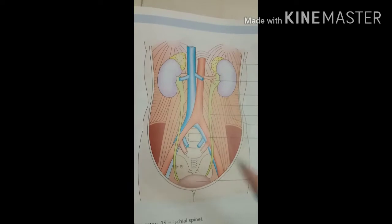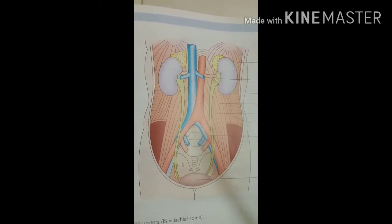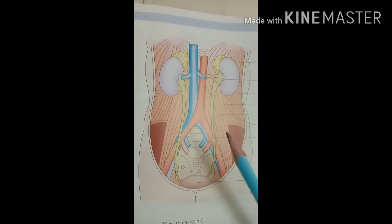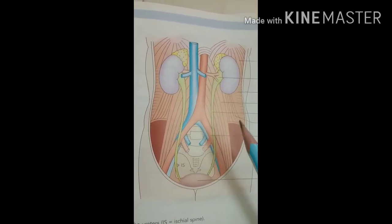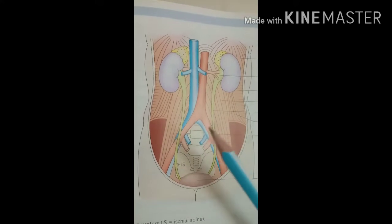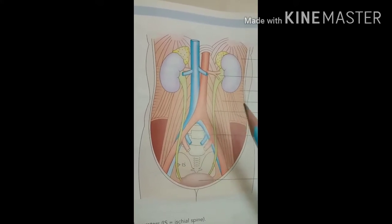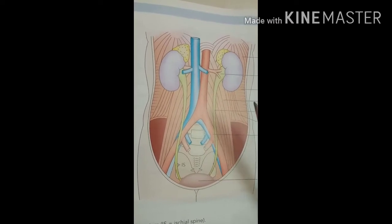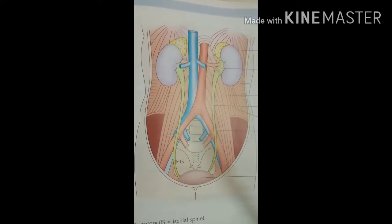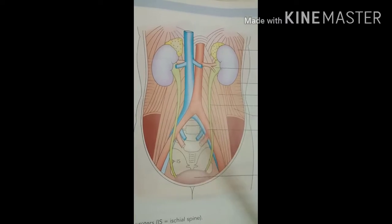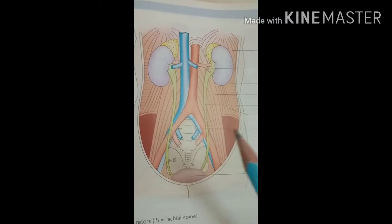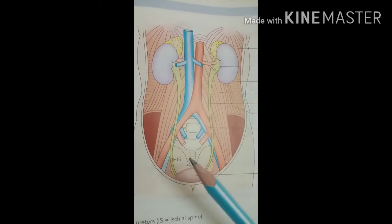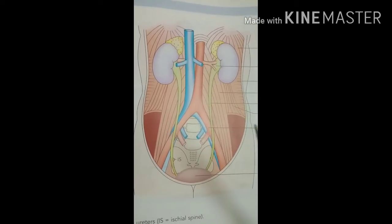Now we look at the histology and internal structure of the ureter. The ureter is made of three layers, from inner to outer. The innermost layer is the mucous membrane, made by transitional epithelial cells. The second layer is the smooth muscular layer — as it is a muscular tubular organ, this smooth muscular layer forms the second layer.